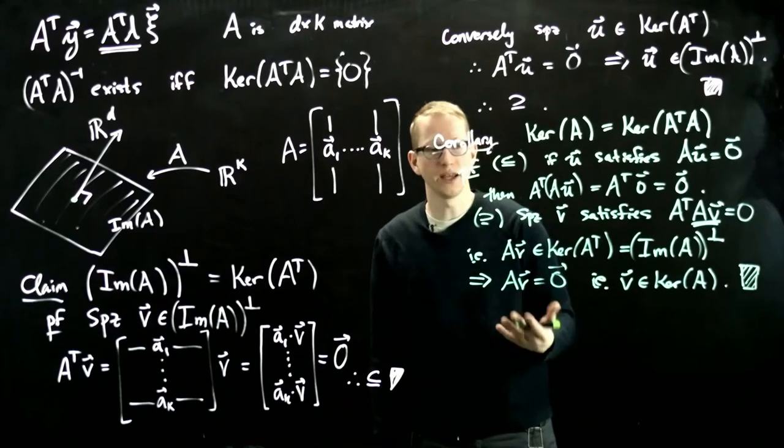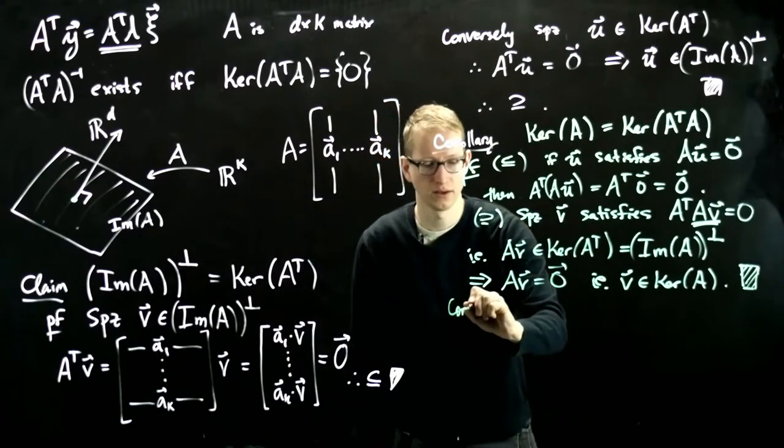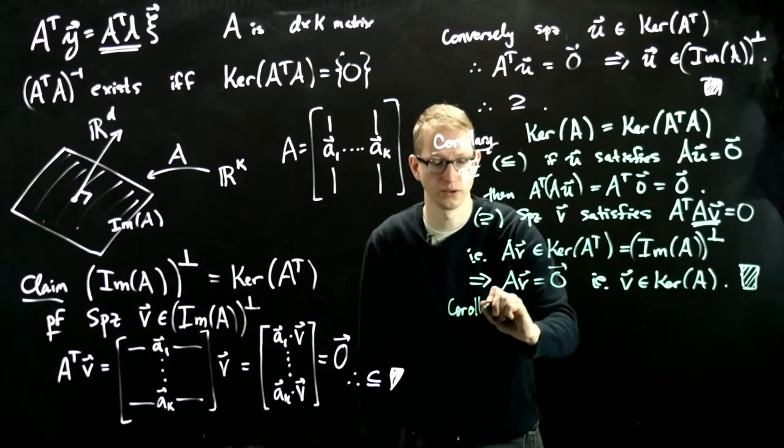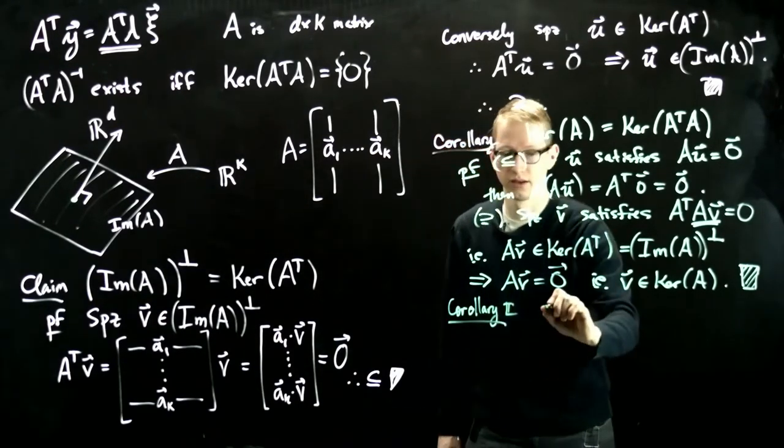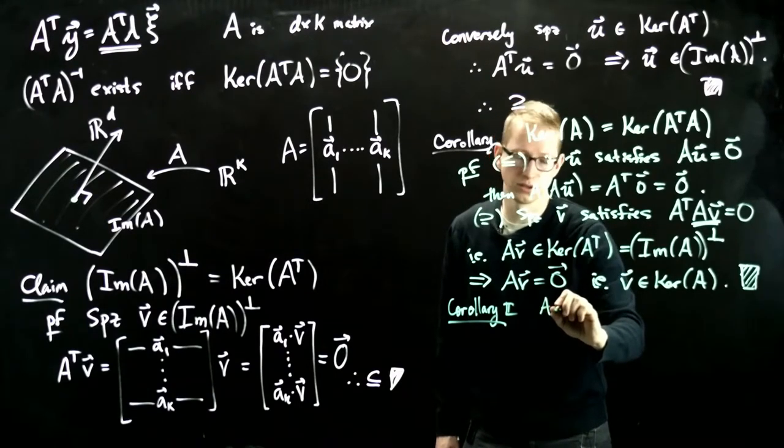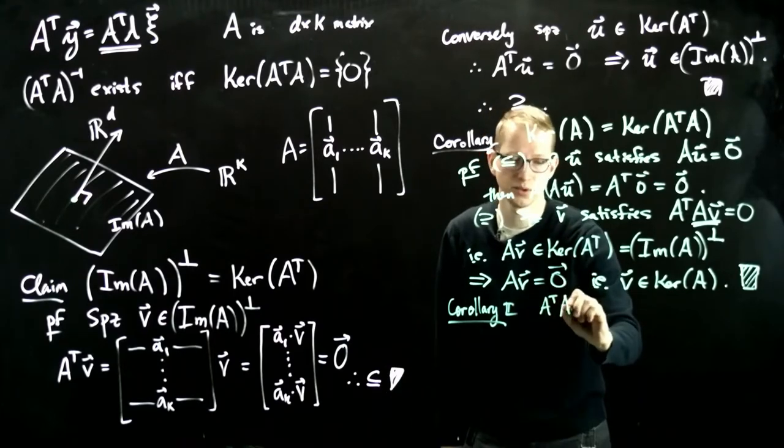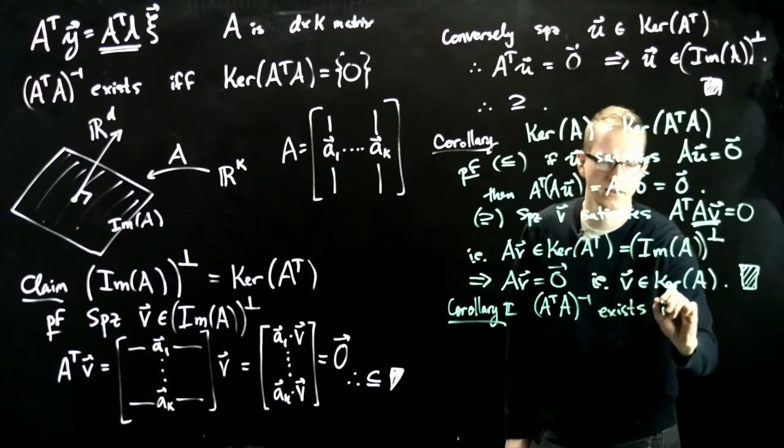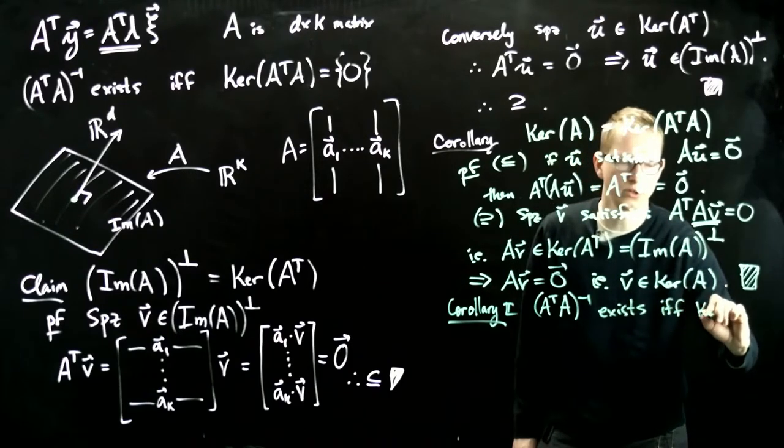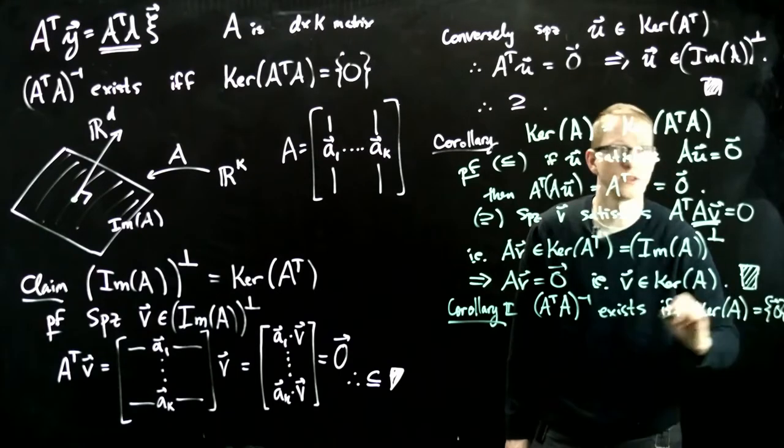And now the containment has been shown in both directions and that's the conclusion of the proof. And let me just write out the final corollary, which is the useful one for us. Corollary 2 is that A transpose A inverse exists if and only if the kernel of A is trivial, so it's only the 0 vector.